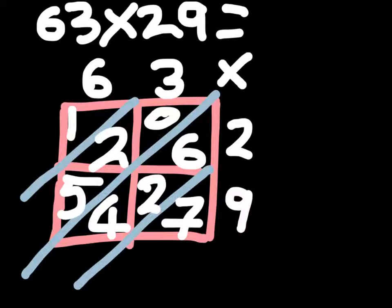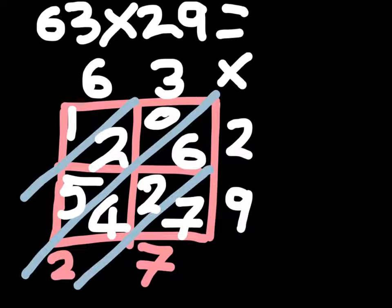Now we need to add them up. So seven, which will just be seven. Then we need to do six plus two plus four, which will be 12. So we put down the two and we carry the one, so that will be three.